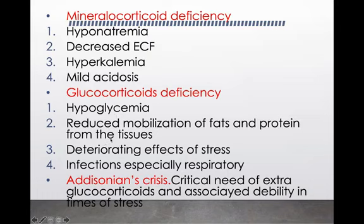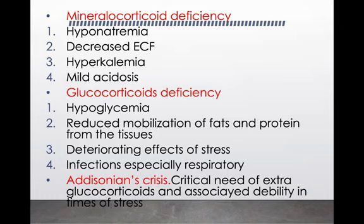Glucocorticoid deficiency also reduces the mobilization of fats and proteins from tissues. Normally, cortisol mobilizes fats and proteins from extra-hepatic tissues to hepatic tissues and the blood. If it is not working, the body won't be able to use fat and protein in cases of excess need — for example, during starvation or stress. This is also why there is a deteriorating effect of stress.